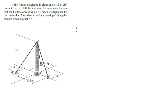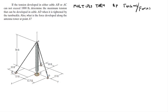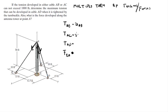Now that we have all the unit vectors, the next step is to multiply them by their respective tensions or forces. We have three cable tensions — T_AB, T_AC, T_AD — and the tower force F_EA. Each must be multiplied by its respective unit vector: T_AB × û_AB, T_AC × û_AC, T_AD × û_AD, and F_EA × û_EA.